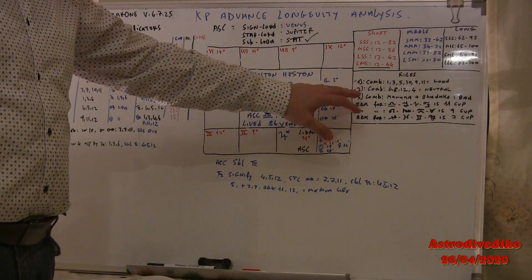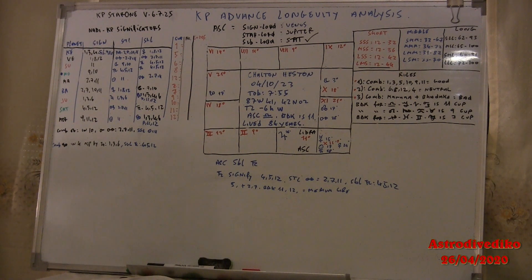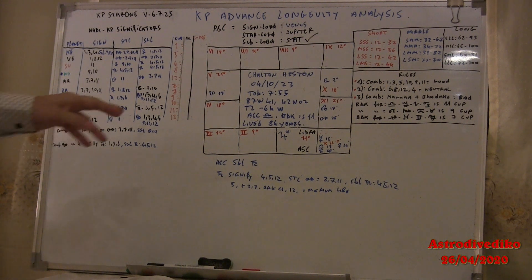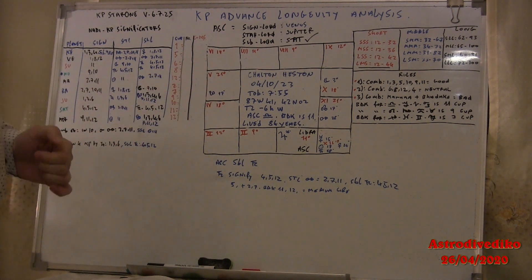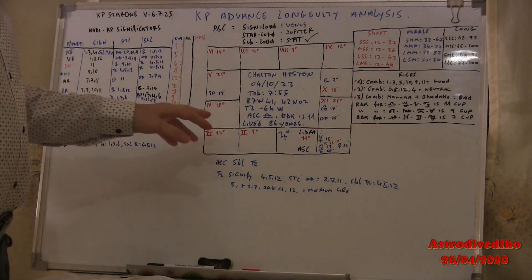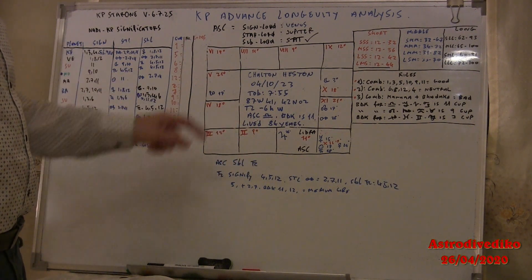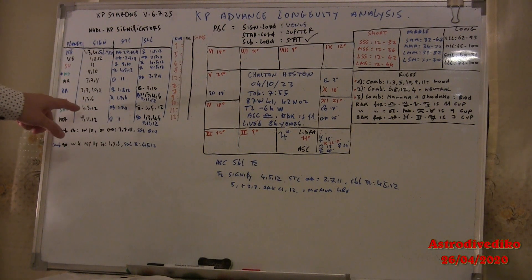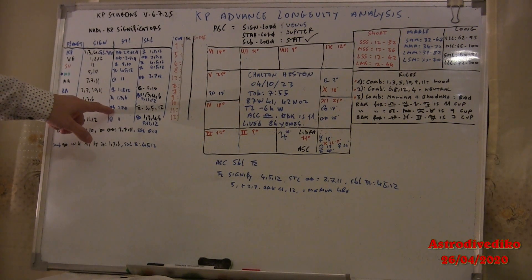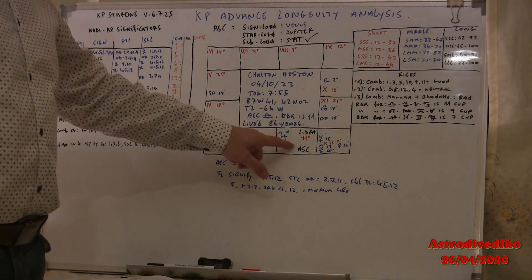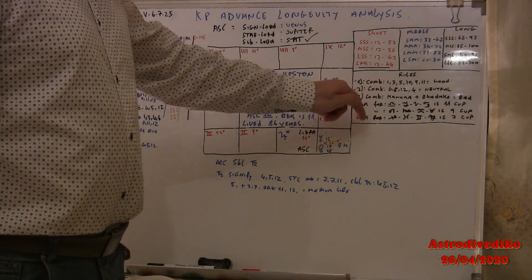I just explained in the previous video the cause and the rules for combinations of good house, neutral house, and bad house. Now if you analyze Charlton Heston in KP Astrology traditional way, it will be like this: ascendant sub lord, ascendant is Libra, the sub lord is Saturn. Saturn symbol signifies 4, 5, 12 in star of Mars that signify 2, 7 Maraca, 11 Badaga. Because for Libra, the Badaga is 11, a bad house for longevity.